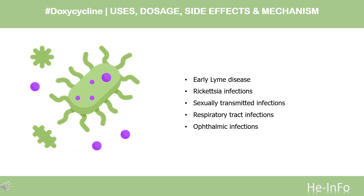Doxycycline is indicated for the treatment of various infections by gram-positive and gram-negative bacteria, aerobes and anaerobes, as well as other types of bacteria. These include Early Lyme disease due to Borrelia burgdorferi in adults and pediatric patients 8 years of age and older weighing 45 kg and above; Rickettsia infections such as Rocky Mountain spotted fever, typhus fever, Q fever, rickettsial pox, and tick fevers; sexually transmitted infections; respiratory tract infections; and specific bacterial infections caused by Escherichia coli, Enterobacter aerogenes, Shigella species, Acinetobacter species, and Klebsiella species. Ophthalmic infections such as inclusion conjunctivitis caused by Chlamydia trachomatis are also indicated.